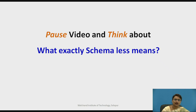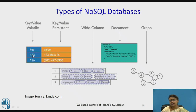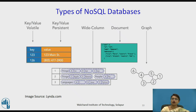Think about what schema-less means and why we call it schema-less. In key-value databases there are two types: key-value volatile and key-value persistent. A key is provided — for example a key like 1-to-3 — and the value associated is given accordingly as a pair. The data for the value may vary, so no schema is required for the value.